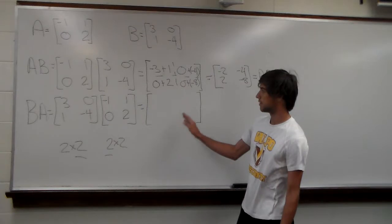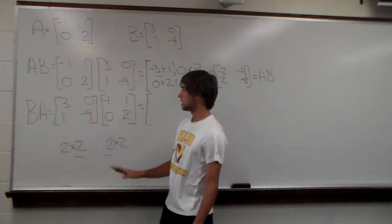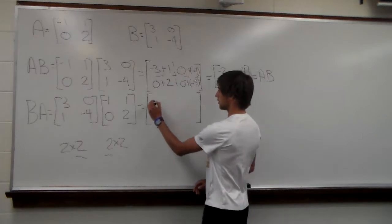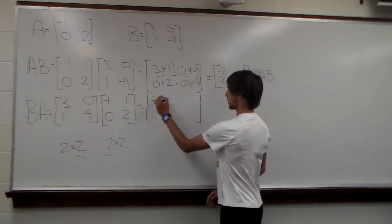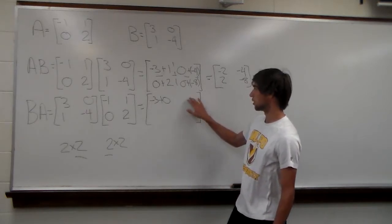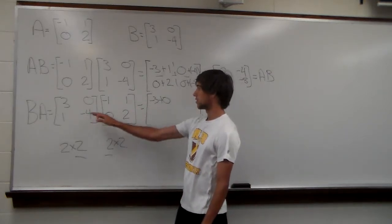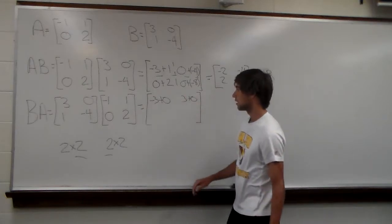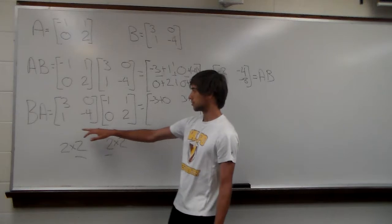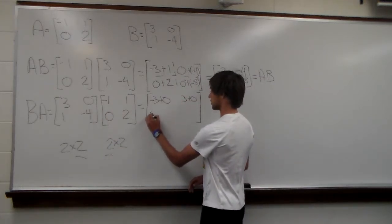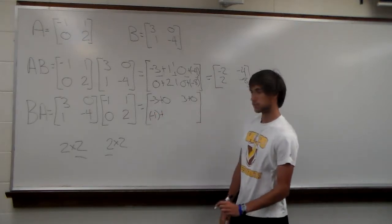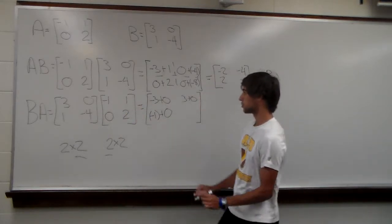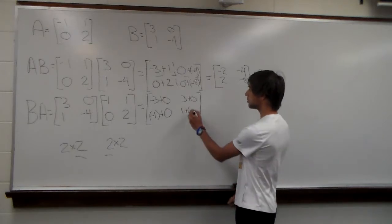Now we do the same thing with B first and then A, multiplying rows of B times columns of A. Row 1, column 1: 3 times negative 1 is negative 3, plus 0 times 0 is 0. Row 1, column 2: 3 times 1 is 3, plus 0 times 2 is 0. Row 2, column 1: 1 times negative 1 is negative 1, plus negative 4 times 0 is 0. Row 2, column 2: 1 times 1 is 1, plus negative 4 times 2 is negative 8.